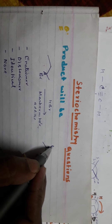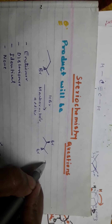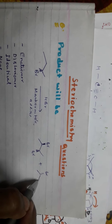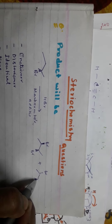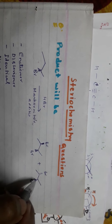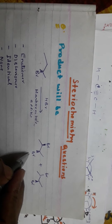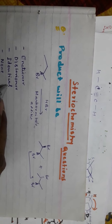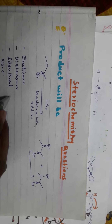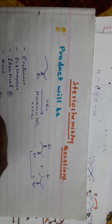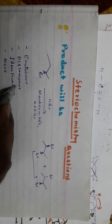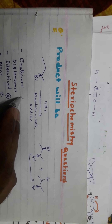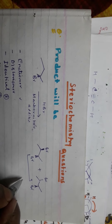That is your first product, but there is a probability of one more product via anti-addition. Some percentage of that will also be formed. So two products are formed. If you see the enantiomers, these two are not identical, so they should be neglected as simple enantiomers. There are chances of enantiomers or diastereomers.